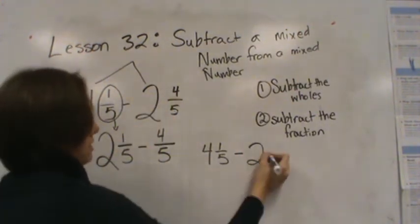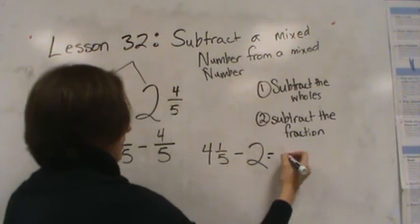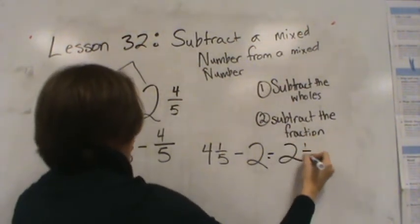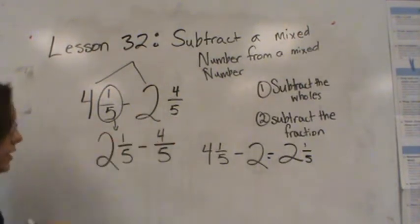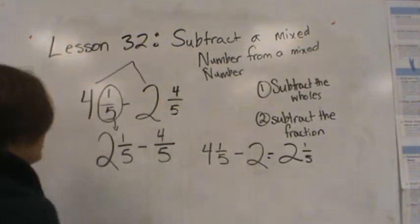So what this really looks like is it's like me taking 4 and 1/5 if I were to take away 2 and not even think about that 4/5. Because what I'm doing is I'm really breaking the whole in the fraction, right? And so I know that if I did 4 minus 1/5, I would get 2 and 1/5. You see it? It's right here. And then I still need to take away 4 more fifths.